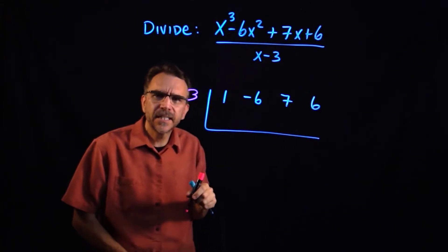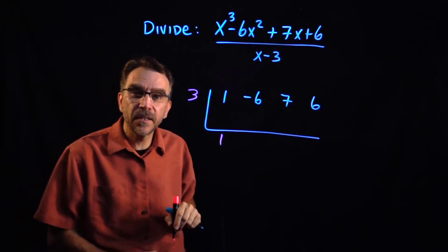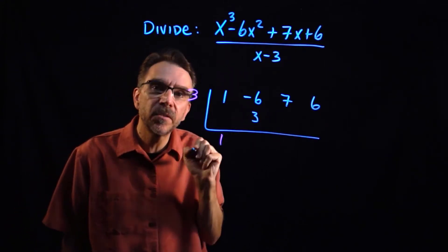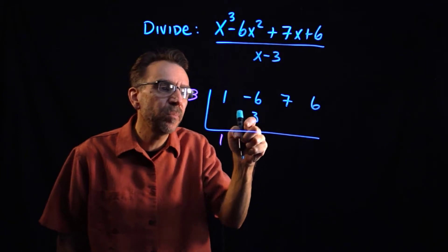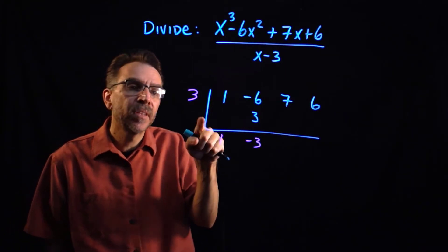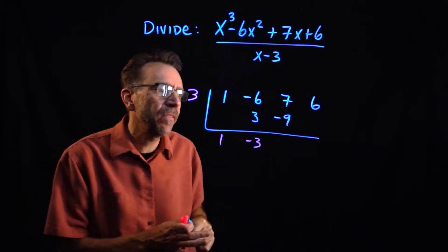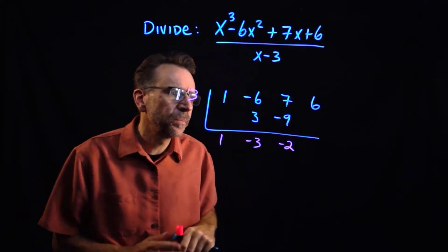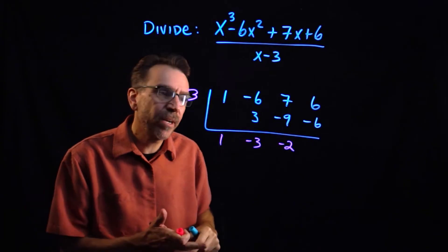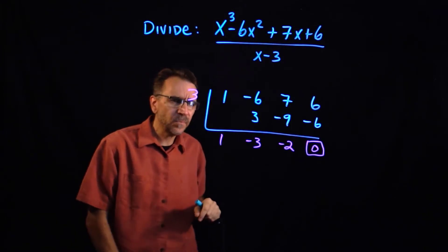For the synthetic division, the first step is to bring down the first coefficient, 1, and write it underneath the line. Then multiply: 3 times 1 is 3, put the result there, and add down — negative 6 plus 3 is negative 3. Multiply again: 3 times negative 3 is negative 9; adding down, 7 plus negative 9 is negative 2. Then 3 times negative 2 is negative 6, and adding down gives zero — that last number is the remainder.